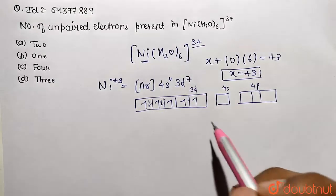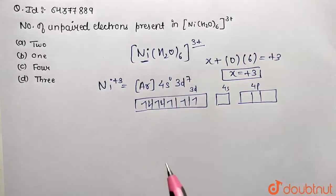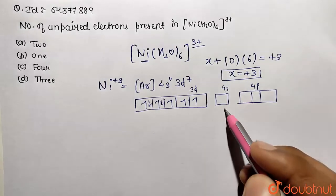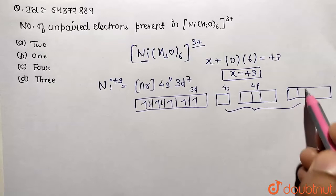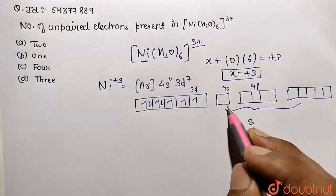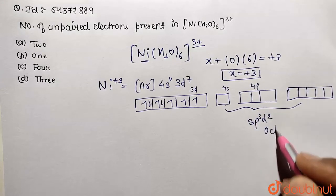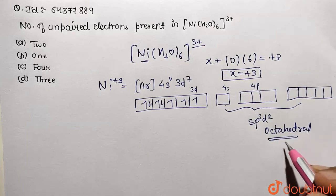So what do I observe? I observe that here it's going to be weak field ligand. So no pairing will take place and it's going to exist 6 set of vacant orbitals. So that will be done by outer set of orbitals which are 4s, 4p and 4d respectively. So the type of hybridization is going to be sp³d² type which is an octahedral geometry and of outer orbital type, outer orbital complex.